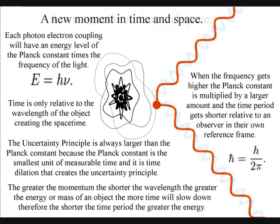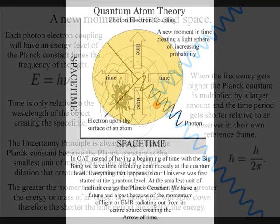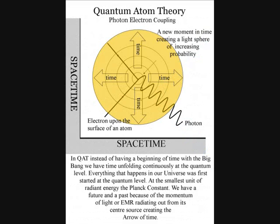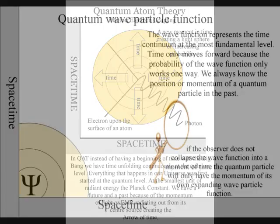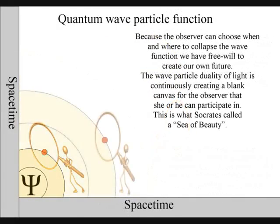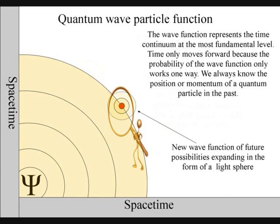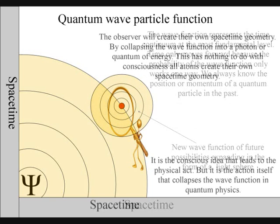In this theory, at the quantum level of the atoms the moment of now is created by a single photon-electron coupling creating a wave function of future possibilities. It is because the observer can choose when and where to collapse the wave function that we have free will. Life will create its own ripples in the fabric of space-time, forming its own broken symmetry of its own evolutionary path or timeline.